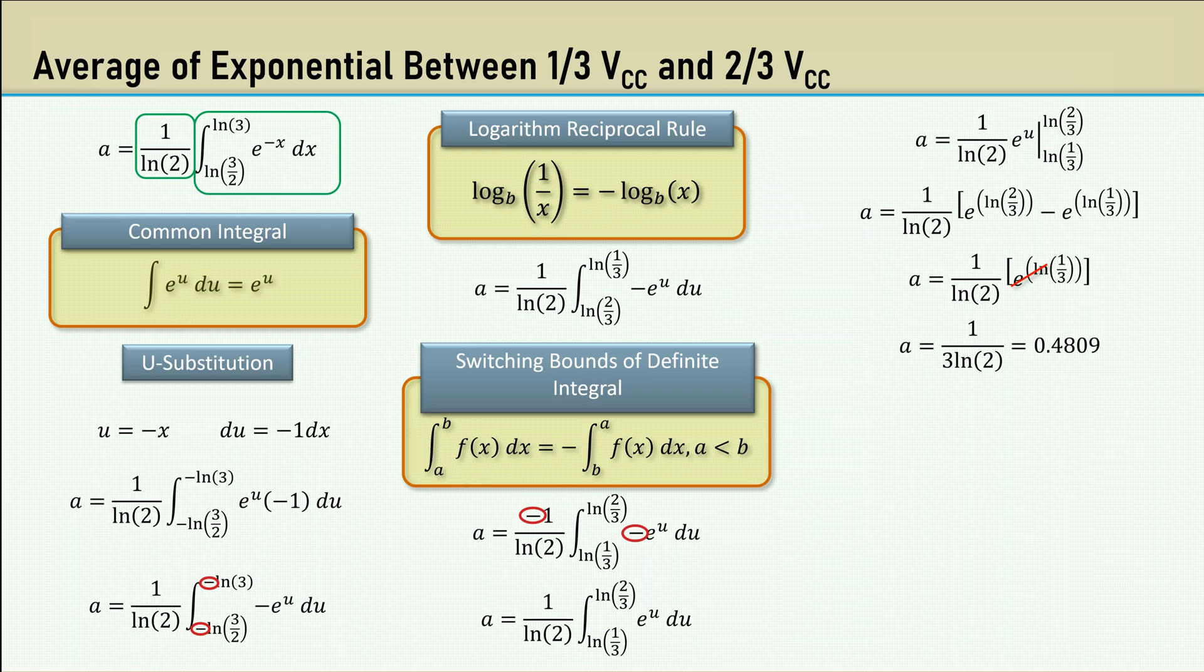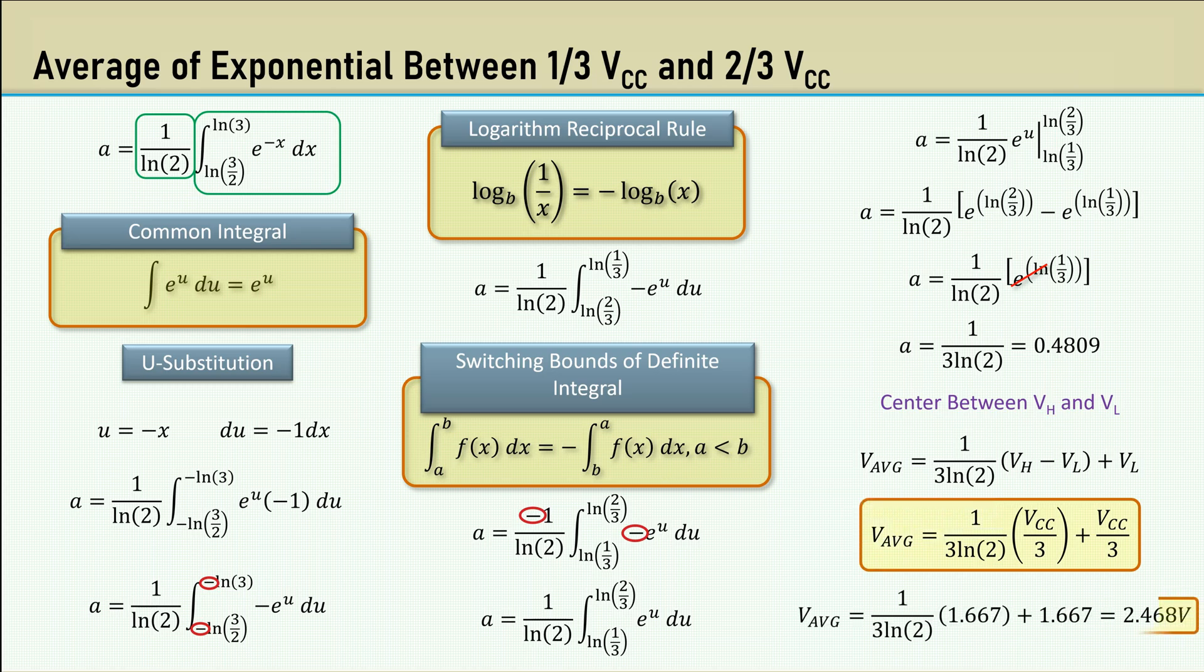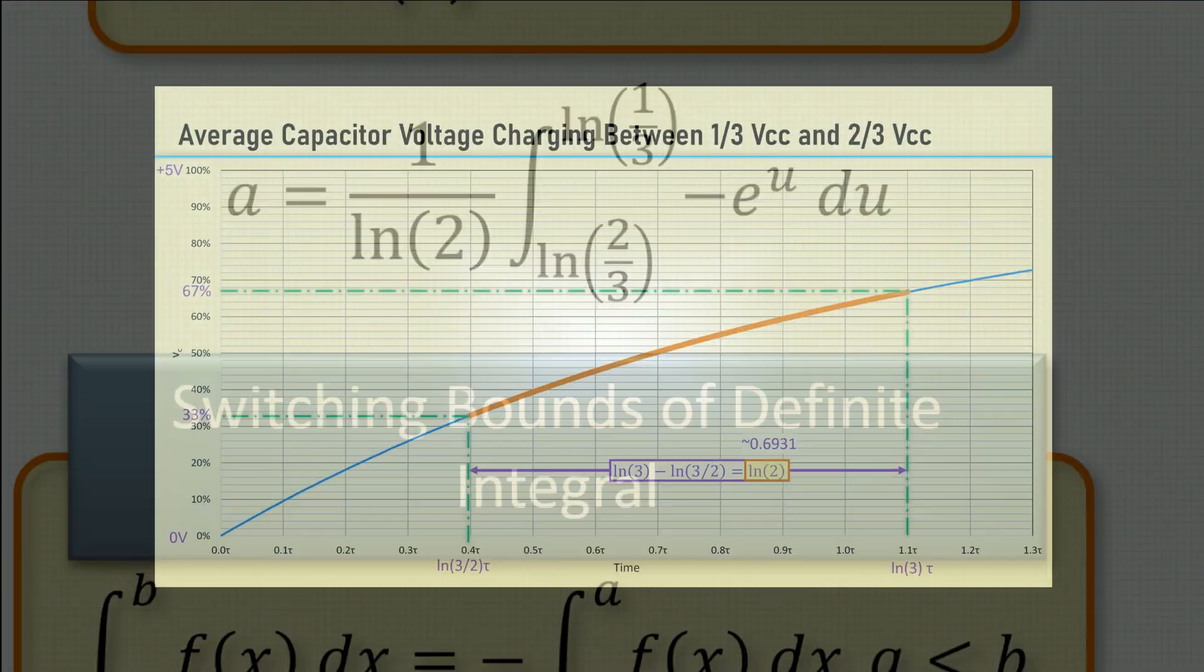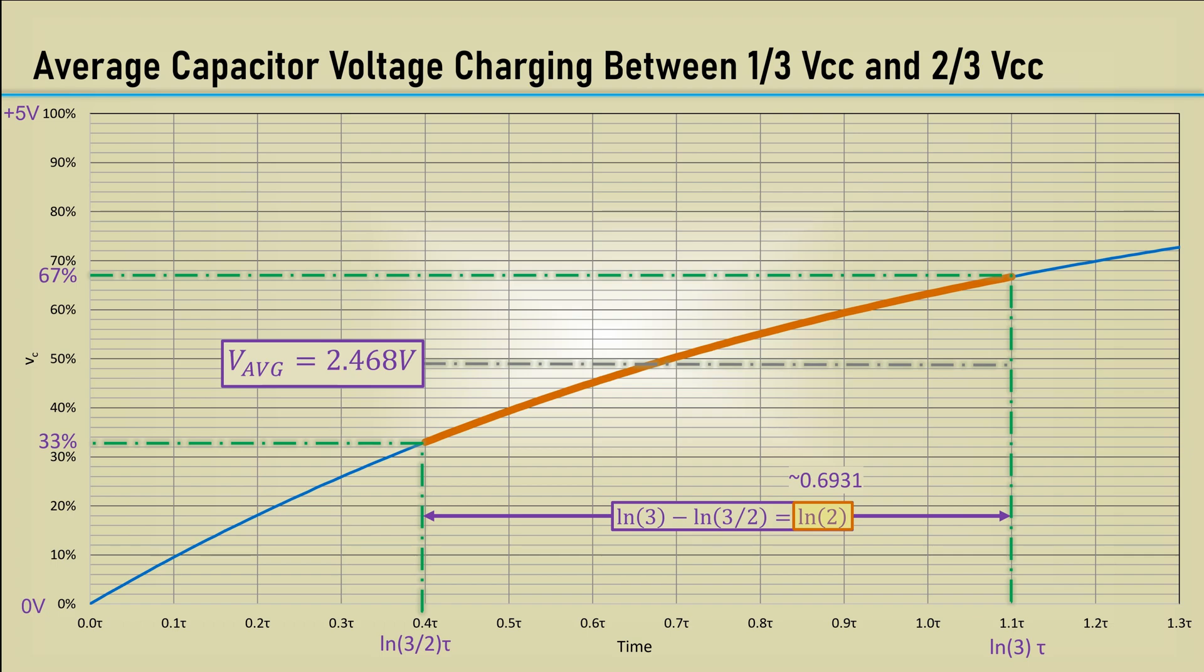E to the X and natural log cancel, so we get 1 over 3 times the natural log of 2, which is 0.4809. We need to center that between VL and VH, so it's multiplied by the difference between VH and VL and offset by VL. That can be simplified by using VCC over 3. That gives us an average voltage during the charge of 2.468 volts. And here's the average voltage shown on the chart.